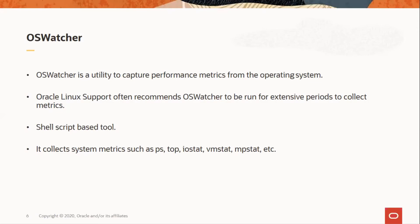OS Watcher is a tool that captures performance metrics from the operating system. It is available as a downloadable utility, which is the OS Watcher black box, and also as an installable RPM file. It stores historical data as per the retention policy, which can be configured via the configuration file for OS Watcher. The OS Watcher is a shell script based tool. To troubleshoot resource utilization and performance problems, Oracle Linux support recommends running OS Watcher for extensive periods. When using the OS Watcher black box, if the system is rebooted for any reason, the system administrator would have to manually start the OS Watcher black box. Using the installable package, OS Watcher can be run as a standard service on Oracle Linux to collect the required runtime data.